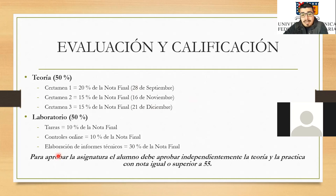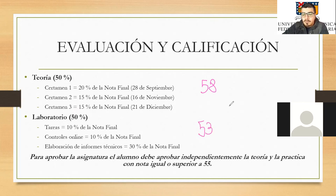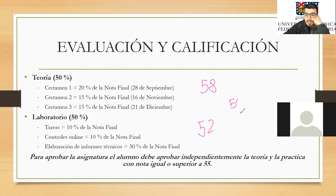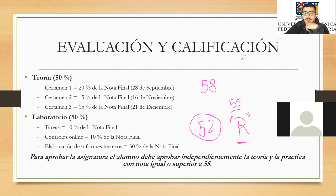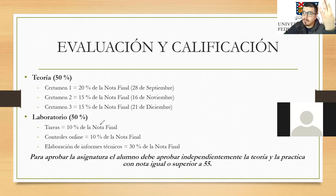Para aprobar la asignatura ustedes tienen que tener aprobado tanto el laboratorio como la teoría. Ojo ahí: si en teoría se sacaron un 58 y en el laboratorio tienen un 53, el promedio les podría dar 55, pero al tener reprobada la parte práctica quedarían como reprobados de la asignatura. Es importante que tengan claro ese tema.